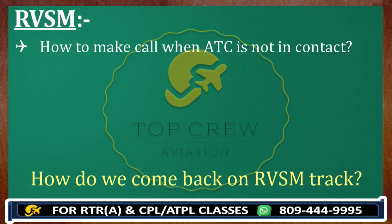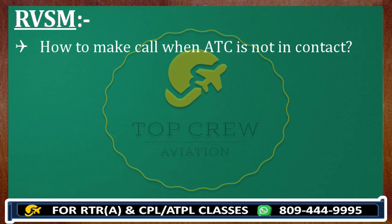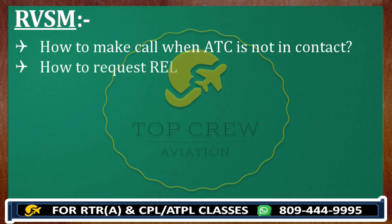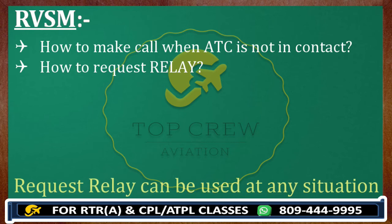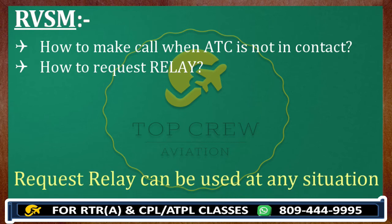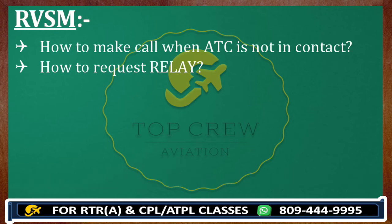If you are not in contact with ATC but somehow monitor any aircraft, we understood how to relay our message. For request relay, there are just two important things: always use the call sign of the aircraft, then at the end say 'request relay.' This request relay is not just for RVSM — you can request relay to any aircraft in any situation whenever you are not in contact with ATC. The procedure is the same; the body of the message will differ. It could be a mayday situation, pan-pan, weather, RVSM, or any normal situation.